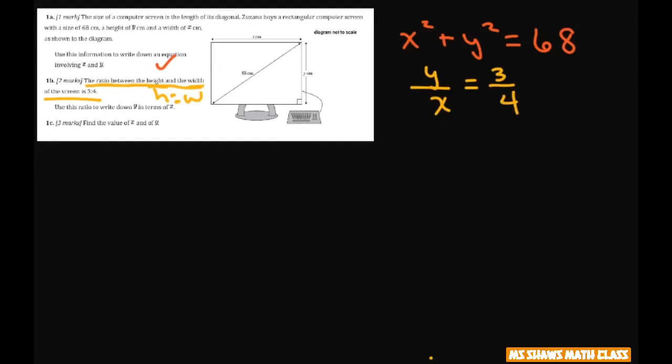Now it says write this ratio in terms of x. Write down y in terms of x. So we're going to solve for y. So that's just going to be y and just cross this x up. So that's going to be 3 fourths and you put the x outside here or put it with the 3.